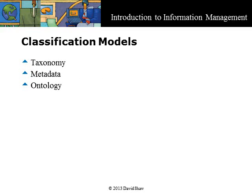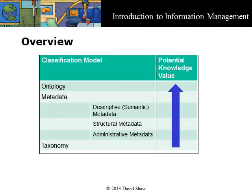There are three models of classification that we will briefly examine in this introduction. The most common you will encounter are taxonomy and metadata, and detailed discussions of these are presented in other course modules. These three classification models have different potential knowledge value, from taxonomy at the bottom of the stack to the richness of an ontology for a semantic knowledge web. The cost of implementation also rises, but offsetting this is the opportunity cost of ignorance. Note that for analysis and planning purposes, there are several types of metadata, with the three most important groups shown here. Groups are also known as types and views.